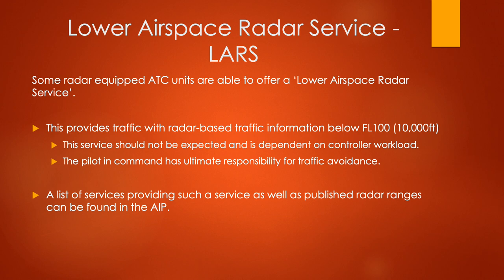The next topic is the lower airspace radar service. Some radar-equipped air traffic control units are able to offer a lower airspace radar service, generally for aircraft below 10,000 feet. Because there's so much traffic they split it up, so a controller can deal with aircraft lower down or higher up. They can give QNH information or other traffic information such as a traffic service, but it also depends on controller workload — if they're not busy they can offer more services, otherwise it may just be a basic service.